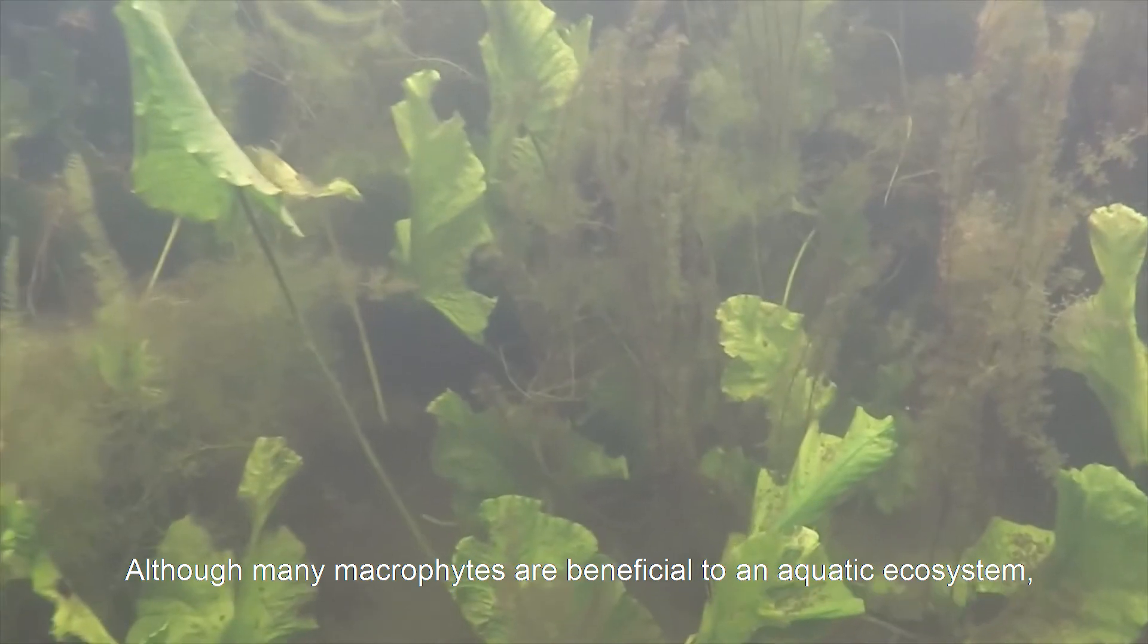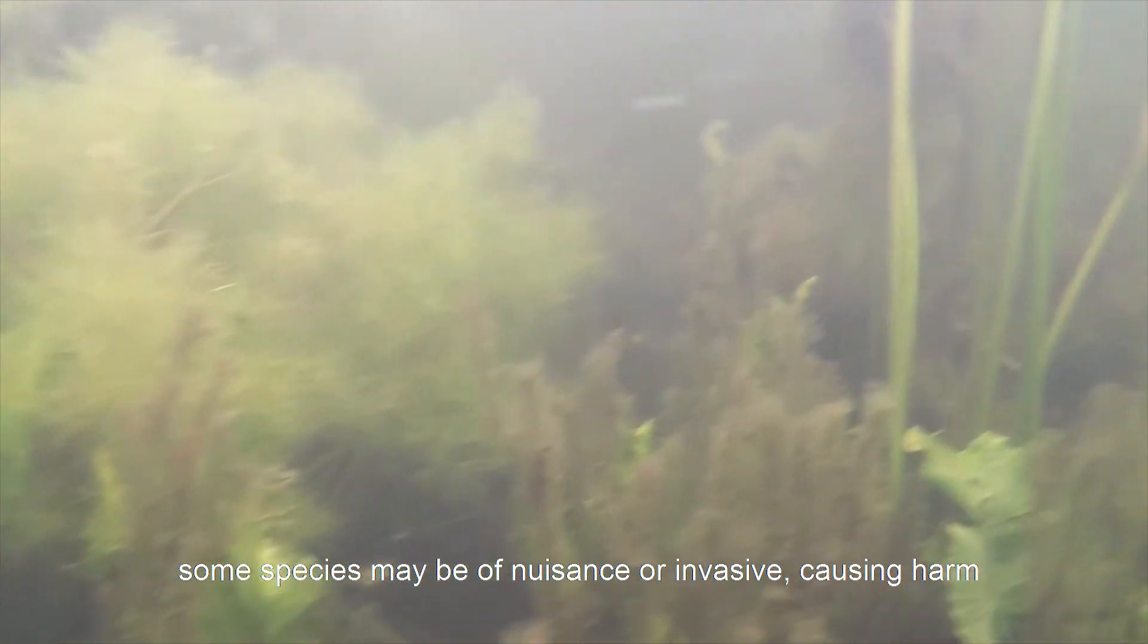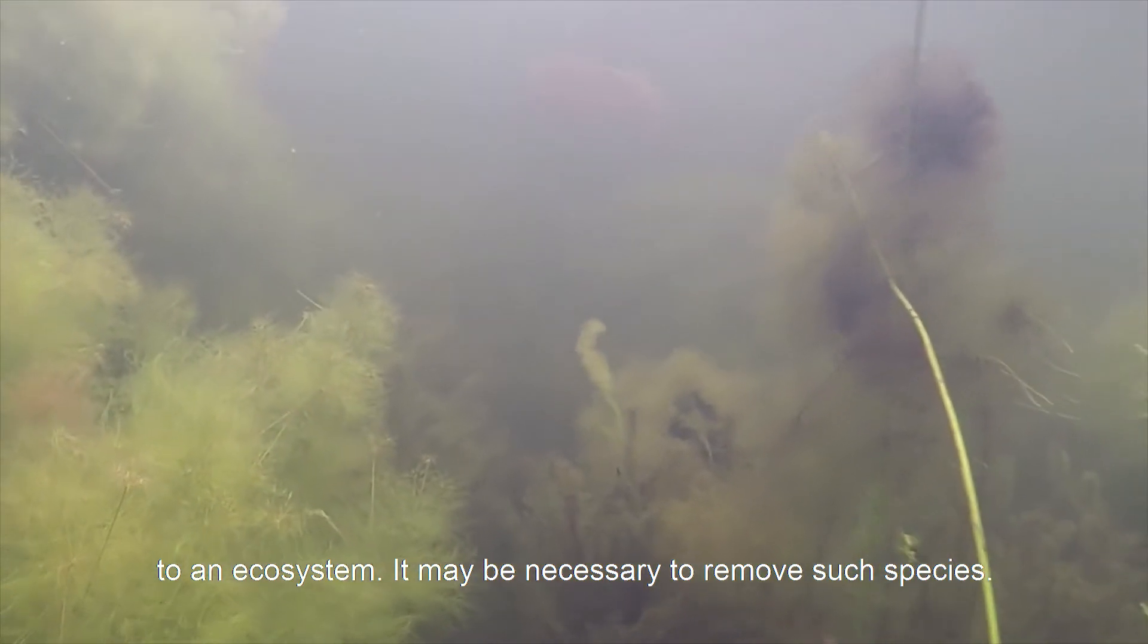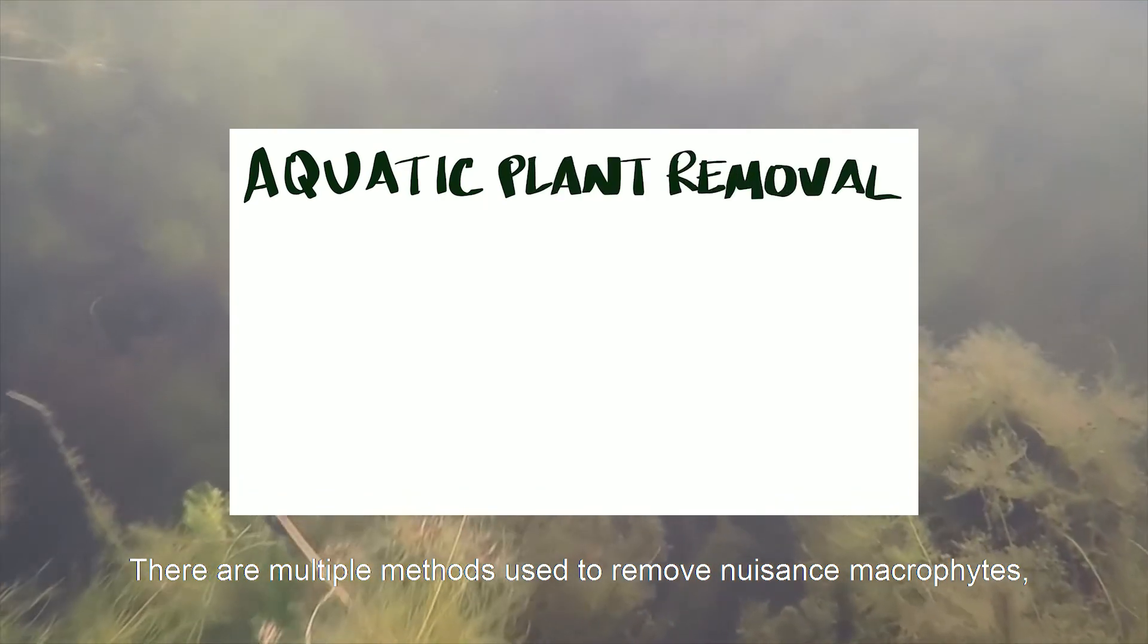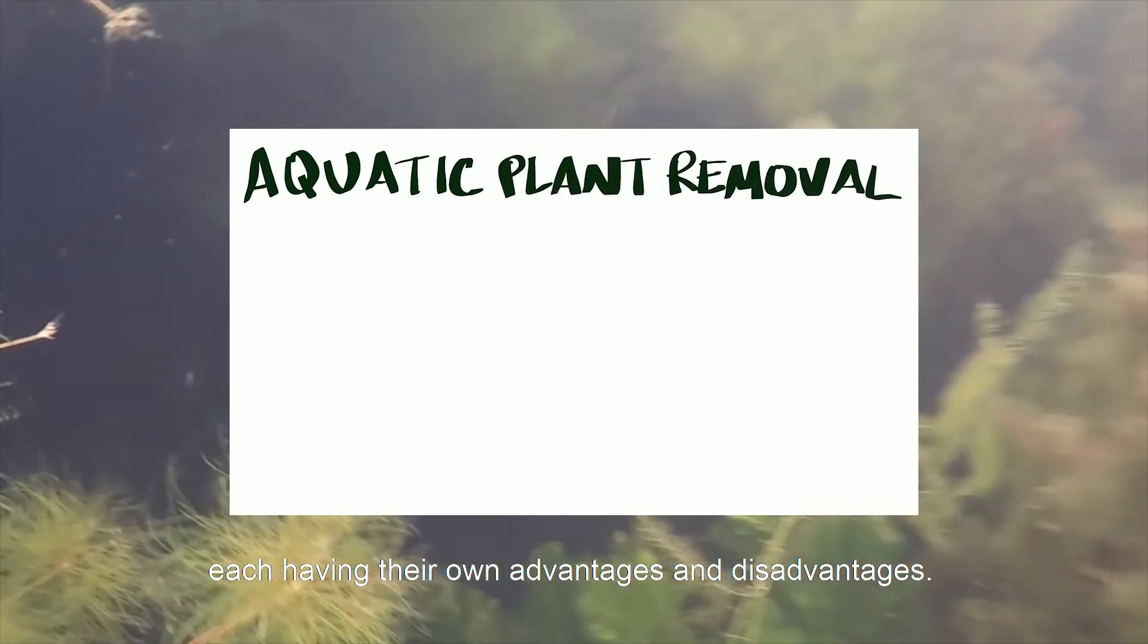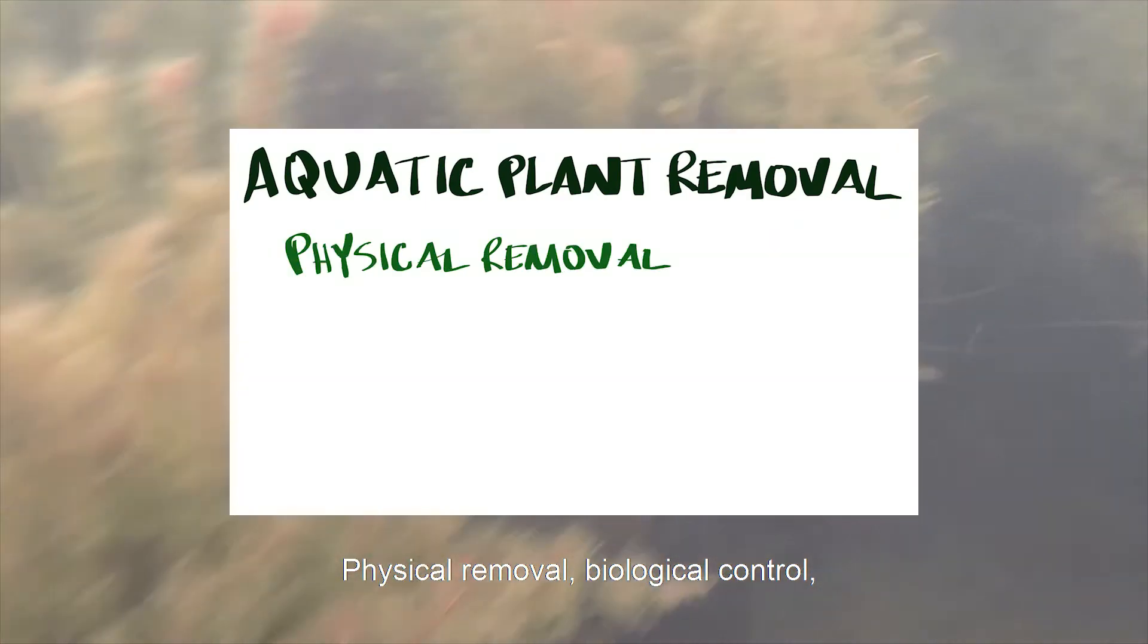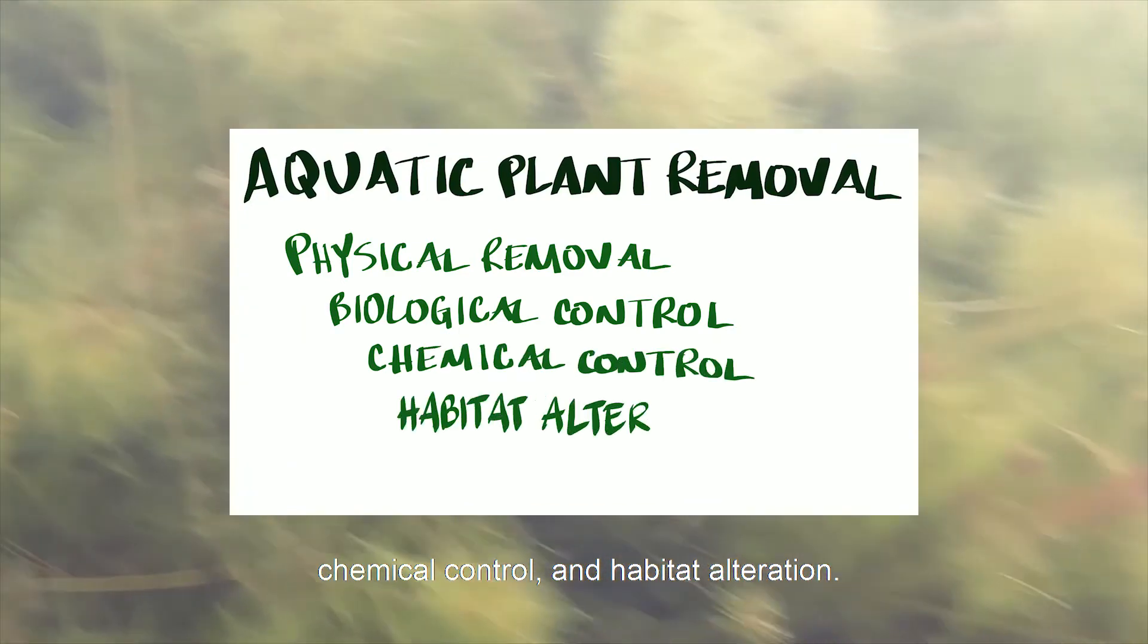Although many macrophytes are beneficial to an aquatic ecosystem, some species may be of nuisance or invasive, causing harm to an ecosystem. It may be necessary to remove such species. There are multiple methods used to remove nuisance macrophytes, each having their own advantages and disadvantages. The four categories of aquatic plant removal include physical removal, biological control, chemical control, and habitat alteration.